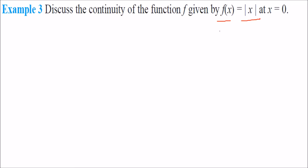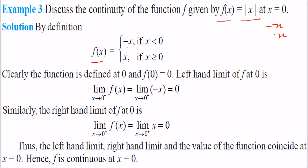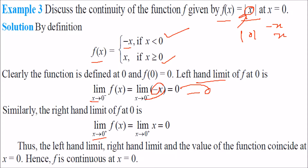Check f(x) = |x| at x = 0. By definition, f(x) = −x if x < 0, and f(x) = x if x ≥ 0. The left-hand limit: placing 0⁻ gives −0 = 0. The right-hand limit: placing 0⁺ gives +0 = 0. The value at x = 0 is also 0. Since limit and value are equal, f is continuous at x = 0.